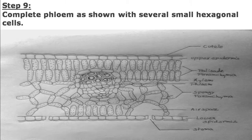Step nine: complete the diagram of the TS of leaf with labeling. Draw labeling lines on the right side of the diagram. The labels to include are: cuticle, upper epidermis, mesophyll tissue — palisade parenchyma and spongy parenchyma — air spaces, stomata, lower epidermis, and stomatal opening with guard cell. In this way, we have completed our transverse section of leaf diagram.